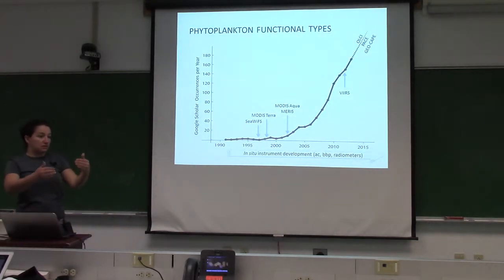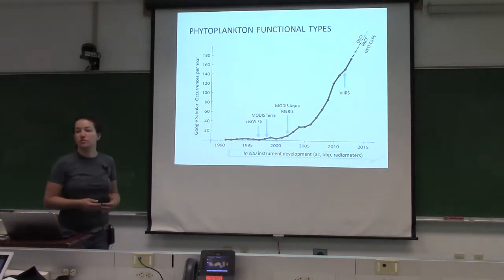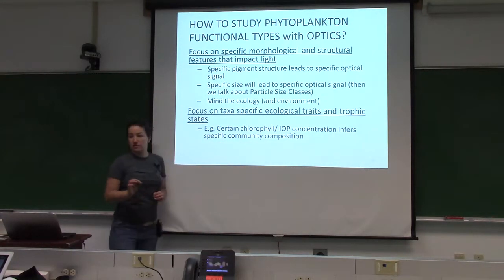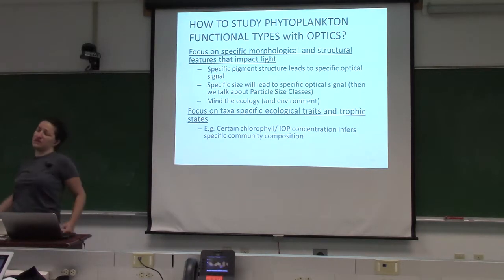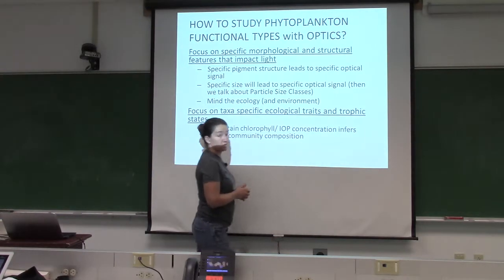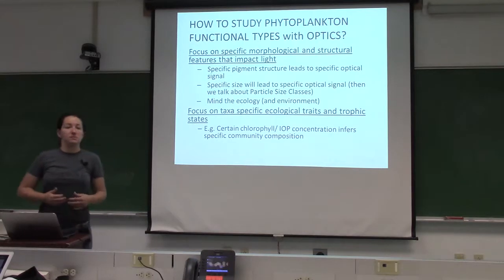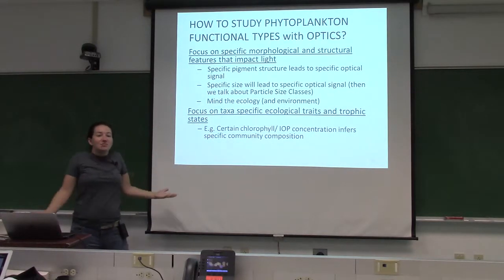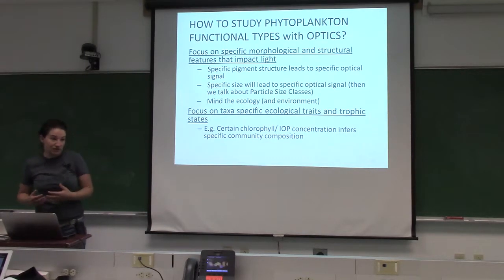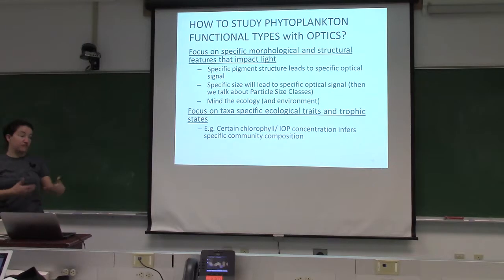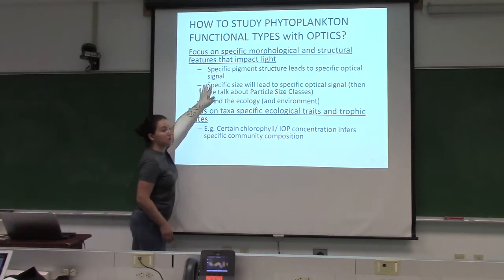Think about how much this impacts things as you move toward deriving phytoplankton functional types using hyperspectral imagery. Try to focus on specific morphological and structural characteristics — specific pigment structures lead to specific optical signals. For example, Karenia brevis has one specific pigment that makes it easy to discern. Specific size will also lead to a specific optical signal, which we'll cover on Friday. Know your measurements, mind the ecology and environment. As Colin said, you might not find an optical pattern for Alexandrium, but Alexandrium blooms where all other dinoflagellates bloom — in specific water types with certain nutrients. Take that into consideration when developing phytoplankton functional types.